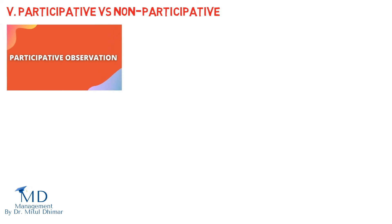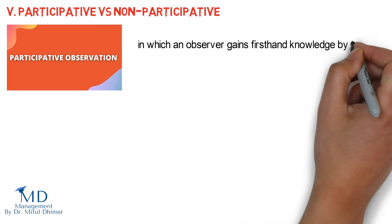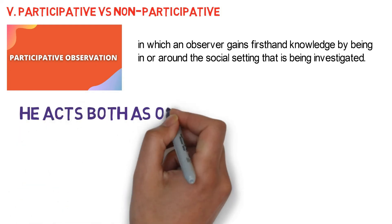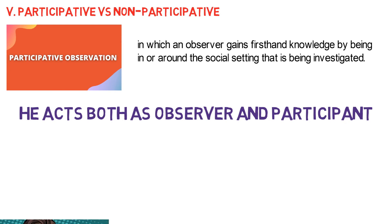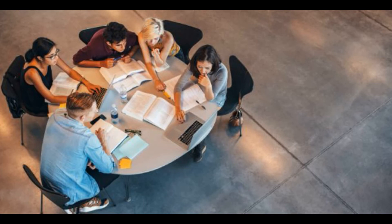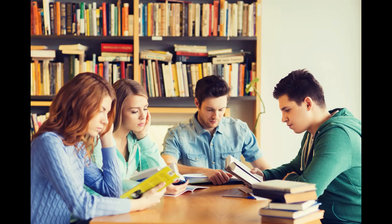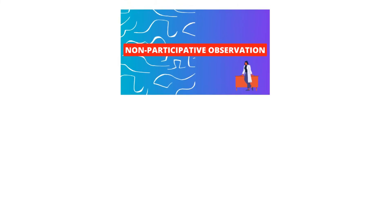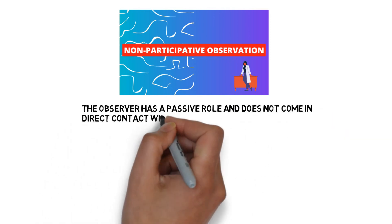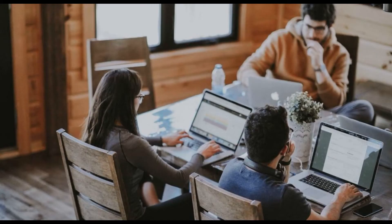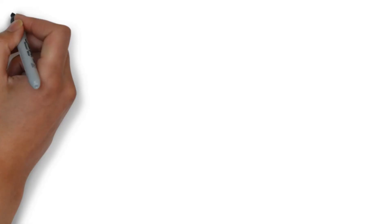Fifth: participative versus non-participative. Participant observation refers to a situation in which an observer gains first-hand knowledge by being in or around the social setting being investigated, acting both as observer and participant. Sometimes the role is known to participants; at other times it is concealed. For example, studies where researchers lived for long periods among different ethnic, cultural, or religious communities. In non-participative observation, the observer has a passive role, does not come into direct contact with respondents, and makes observations from a distance — for example, researchers sitting in on meetings or workshops without actively participating.